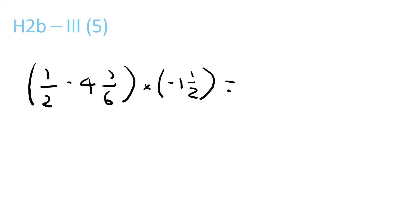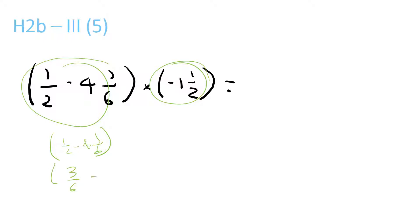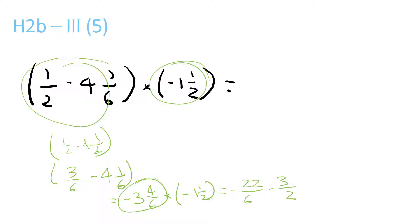Okay, here you solve this equation and remove the brackets. So brackets 1/2 minus 1/2 minus 4 and 1/6 brackets — you've got to make it into 3/6 brackets minus 4 and 1/6. That equals minus 3 and 4/6, and then times brackets minus 1 and 1/2 equals. So minus 3 over 2 times minus 3 over 2 — there's already a plus — so 11 over 2.